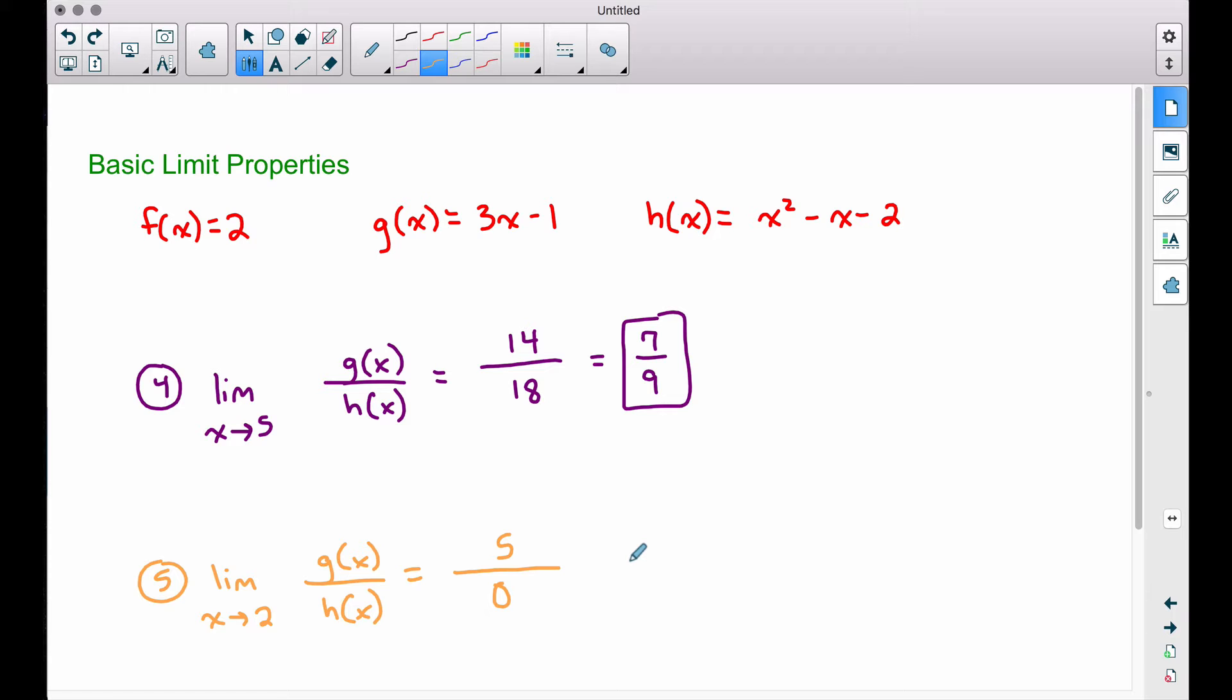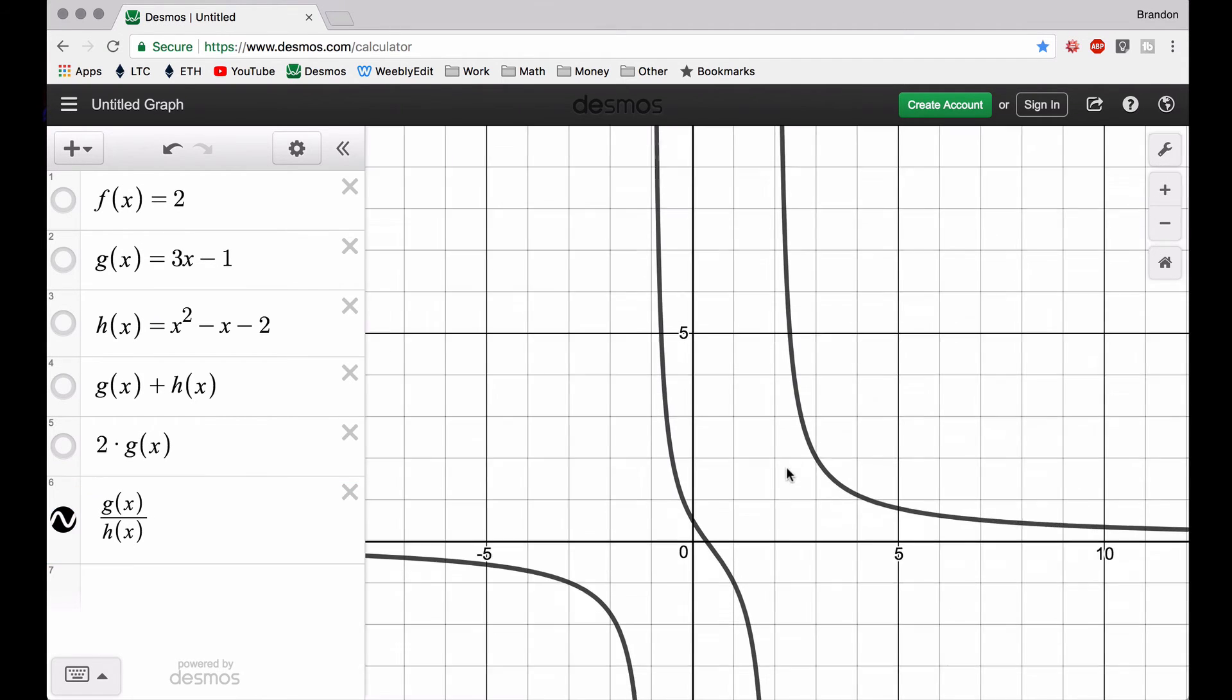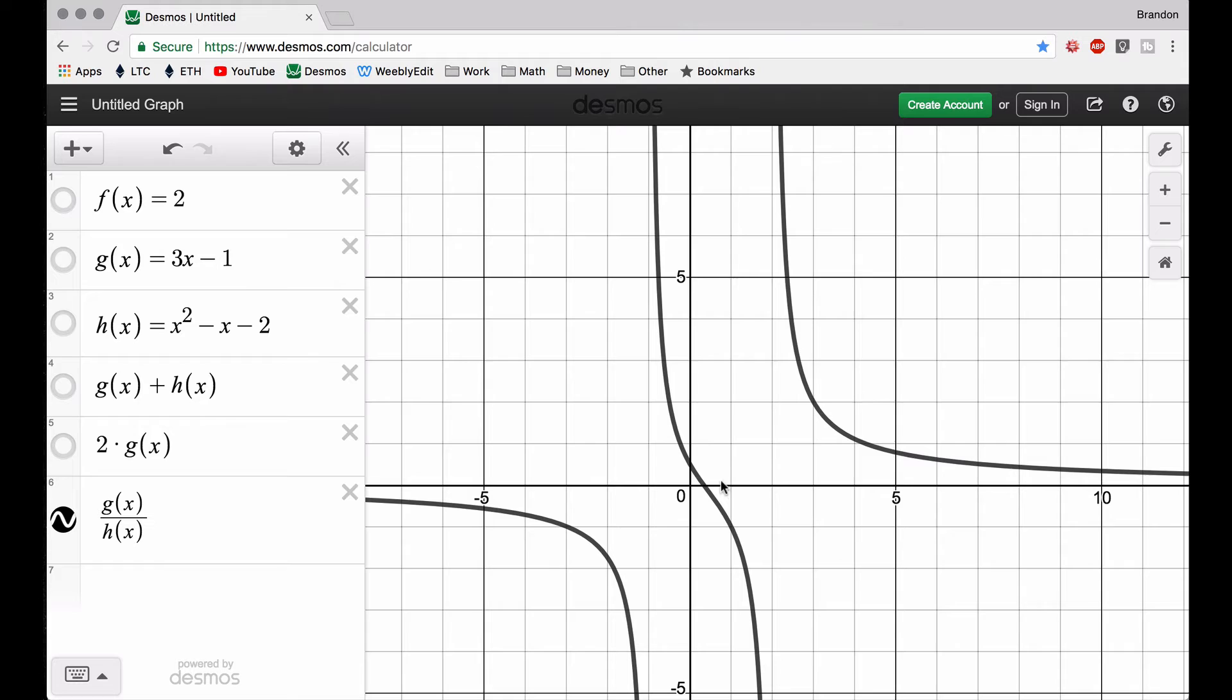Let's have a look at the graph. So we have the same g of x over h of x as we had in example 4, and now we have it in example 5. But now we are approaching a different x value. The x value that we want to approach now is 2. Well, this is where x is equal to 2, because we got 2, 4, 6, 8, 10, and I can actually zoom in a little bit and probably show this a little bit better to you right here. So now we got 0, 1, 2, 3, 4, 5, so 2 is right here.